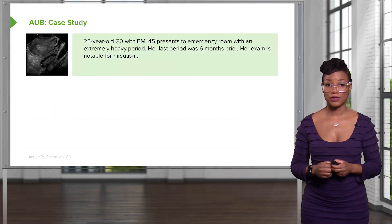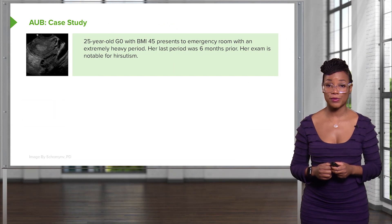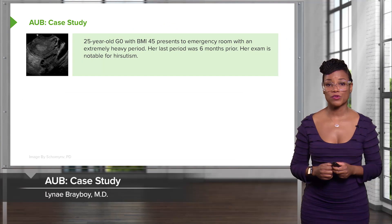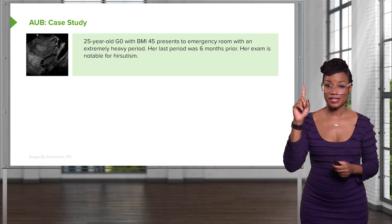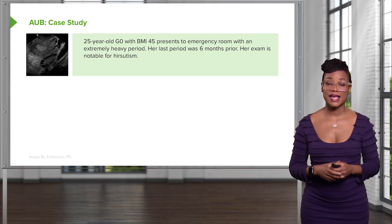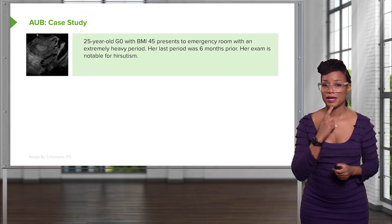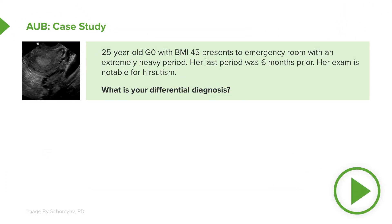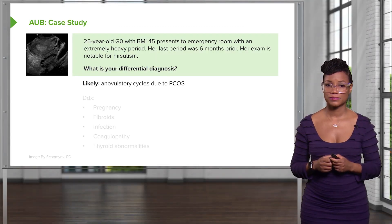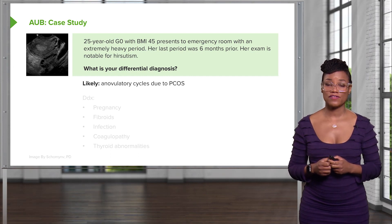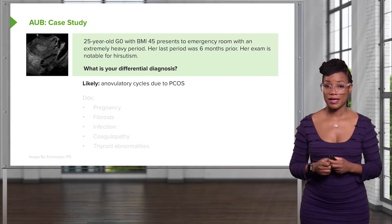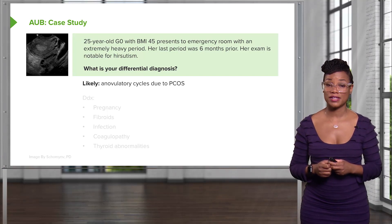Let's review a case of AUB. Here we have a 25-year-old G0 with a BMI of 45 who presents to the emergency room with an extremely heavy period. Her last period was six months ago — that should be a red flag, as you should have a period every month. Her exam is notable for hirsutism. She has a high BMI and hirsutism. PCOS should be your most likely diagnosis, given that it's very common, she has an elevated BMI — most PCOS patients are obese — and they also have some type of hyperandrogenemia, which often leads to hirsutism.